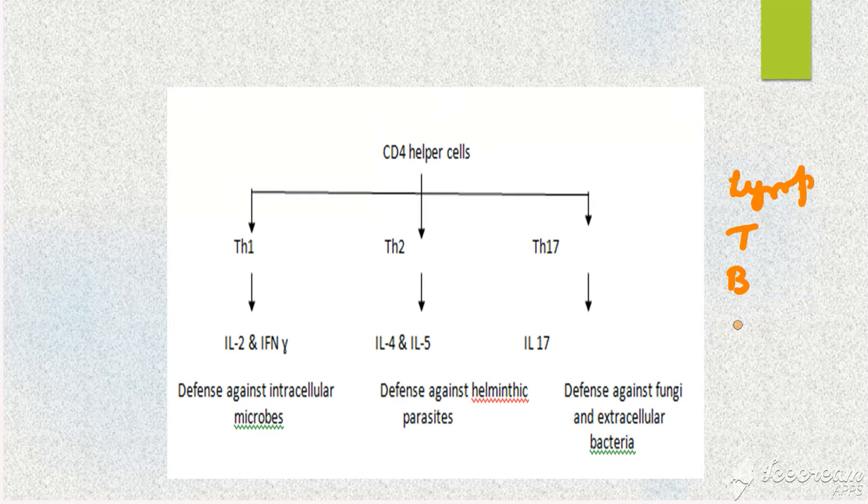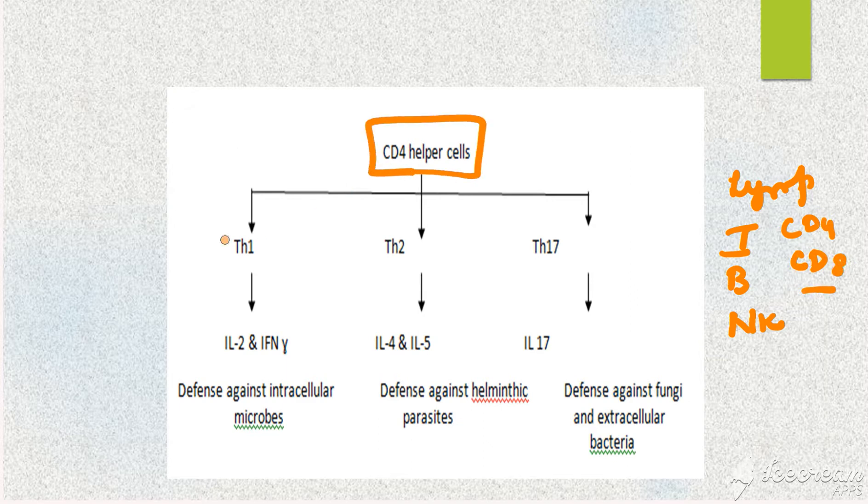In T lymphocytes you have CD4 cells and CD8 cells. If you take CD4 cells, they can be T helper 1 cells, T helper 2 cells, or T helper 17 cells.